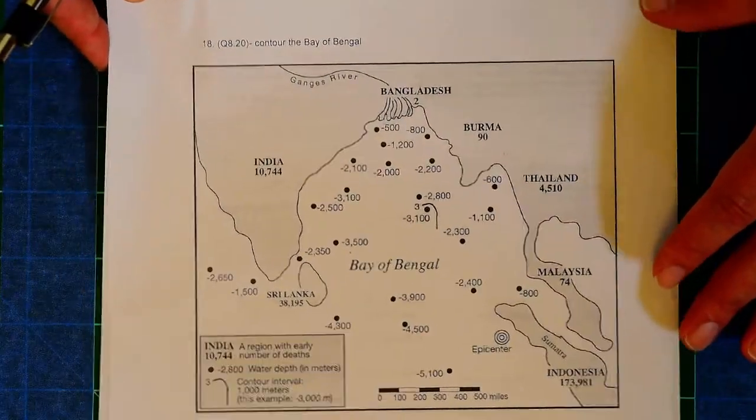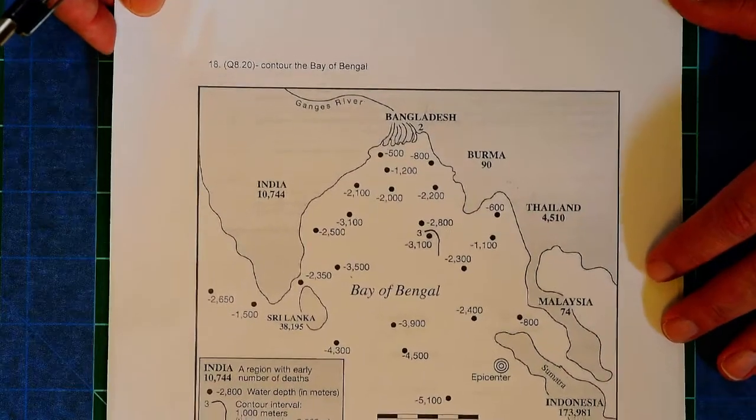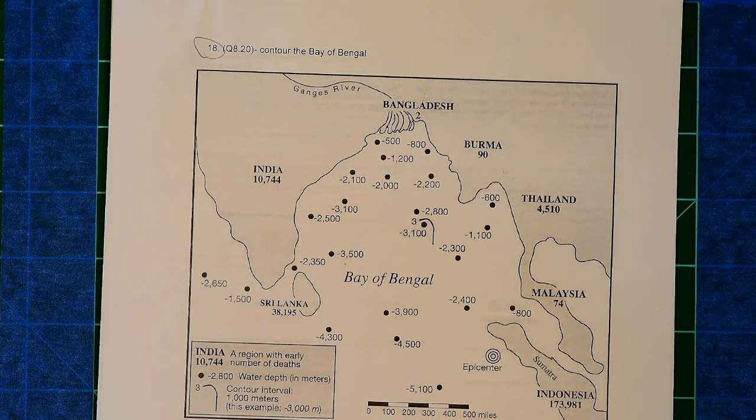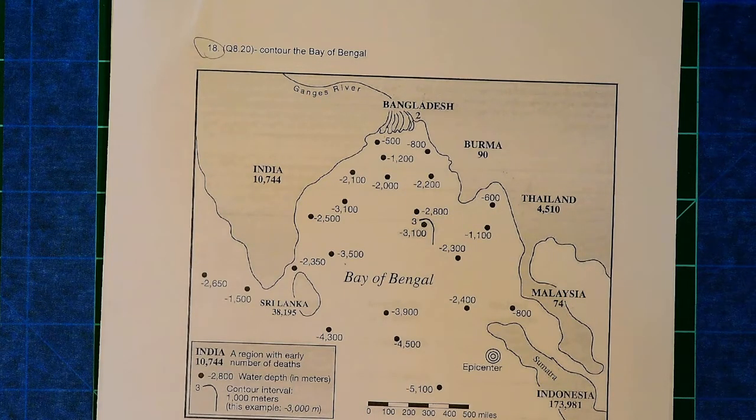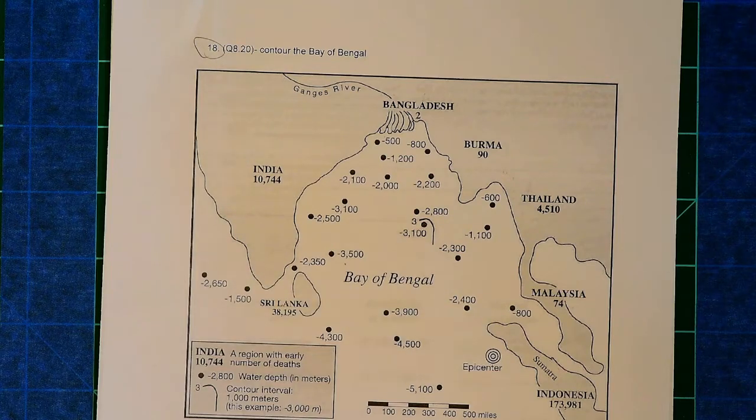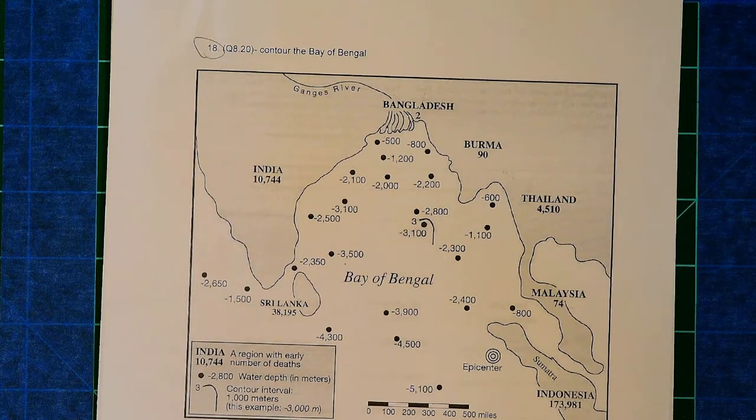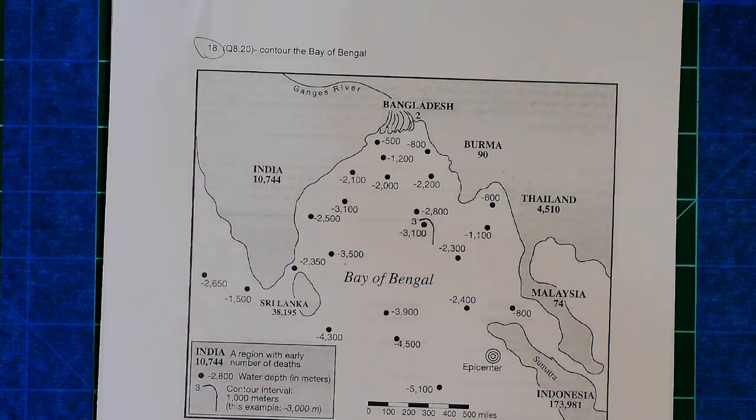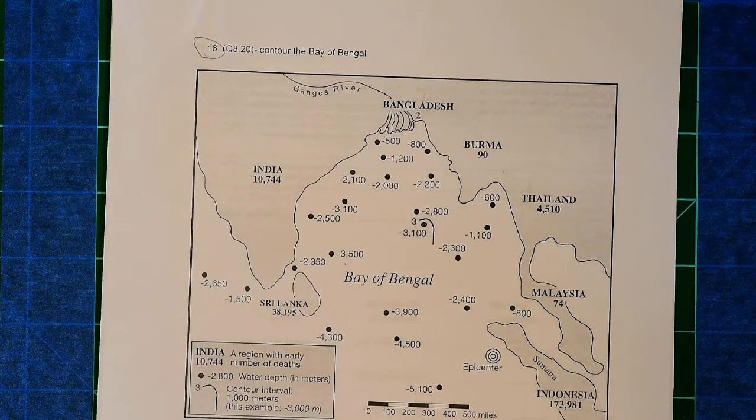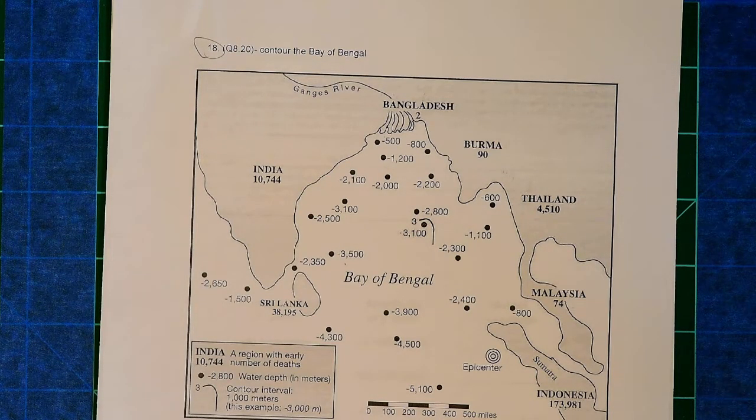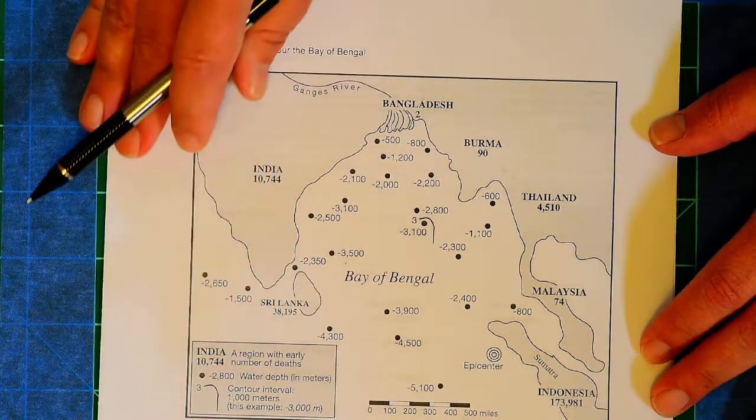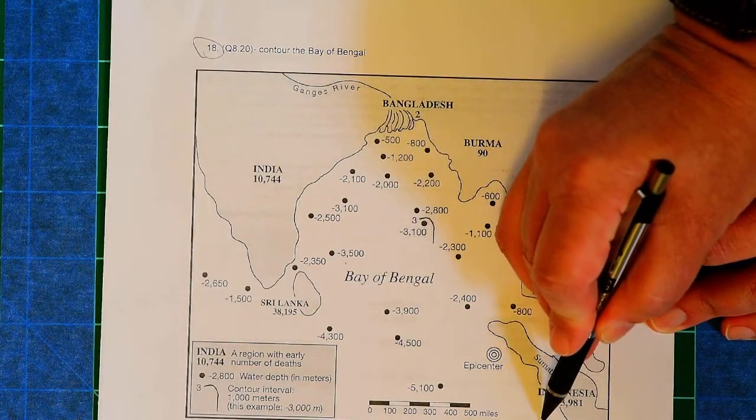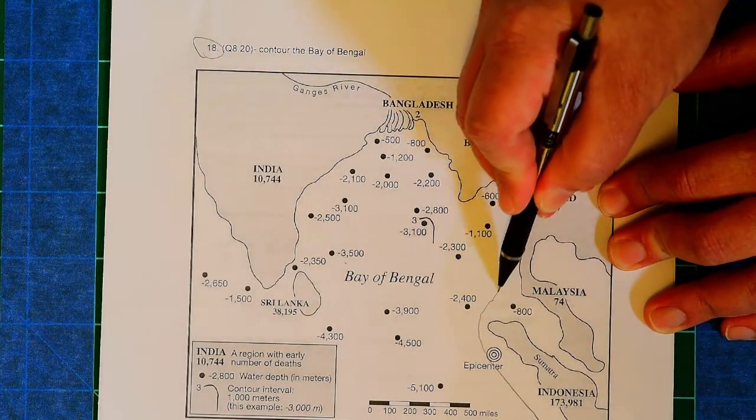All right. Now, second to last of the somewhat challenging questions that we have is here, question number 18, where it says, contour the Bay of Bengal. All right. I understand many of you have not had physical geology, so you don't know how to contour things. That's why we're going to do this problem together right now. When we contour things, what we're doing is we're either showing the elevation above sea level or the depth below sea level. In this case, we're going to draw in the depth below sea level in thousands of meters. So, for example, let's see. Let's draw in a thousand meters.